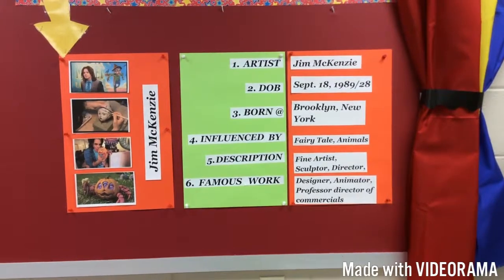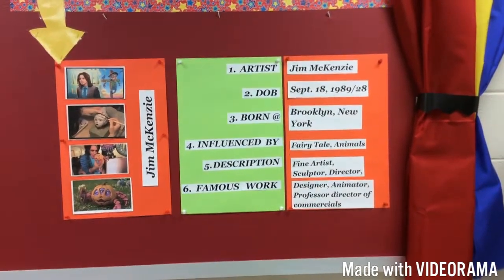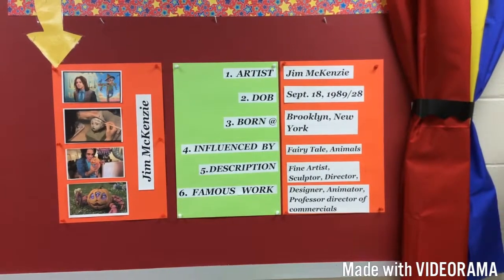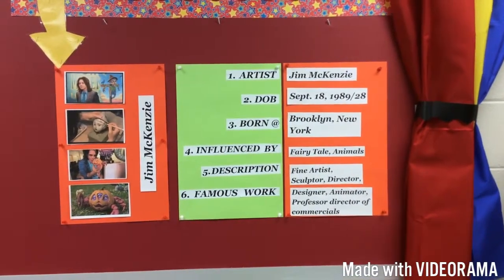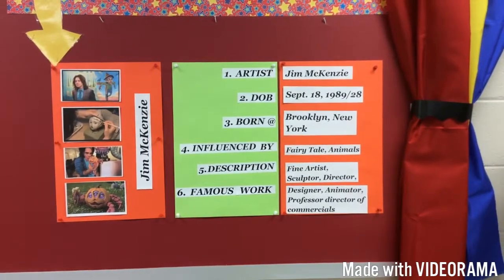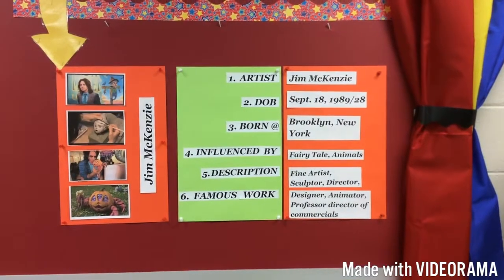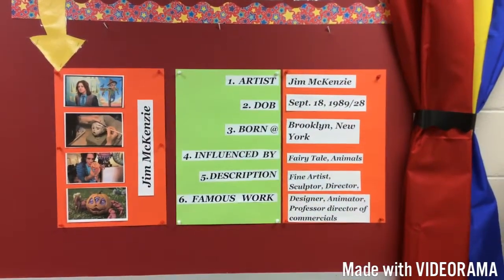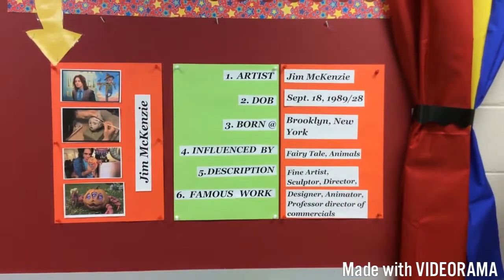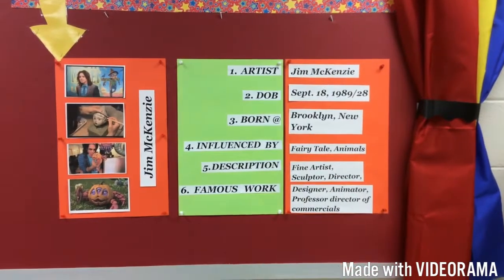Number two is DOB, which means date of birth. He was born September 18, 1989. He's still alive today, he's 28 years old. He was born in Brooklyn, New York, influenced by fairy tales and animals. And description of him, he's a fine artist, a sculptor, and a director. His famous work includes being a designer, animator, professor, and director of commercials.